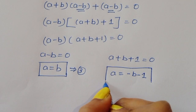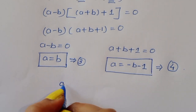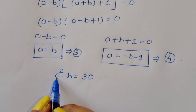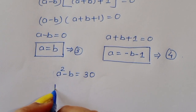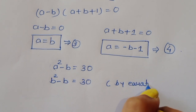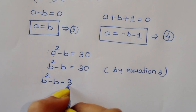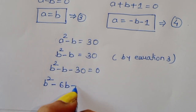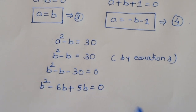Now using equation 3 (a equals b) in equation 1 (a squared minus b equals 30): substituting a with b gives b squared minus b equals 30, so b squared minus b minus 30 equals 0. We split the middle term as minus 6b plus 5b.